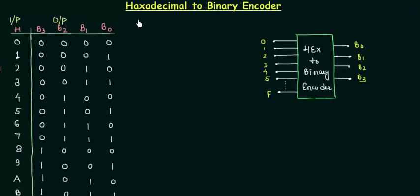The last type of encoder that we have to complete in this particular course is hexadecimal to binary encoder. Now you already know that in case of hexadecimal number system the base or radix R is equal to 16, which means there are in total 16 distinct digits in case of hexadecimal number system and they are from 0 to F.